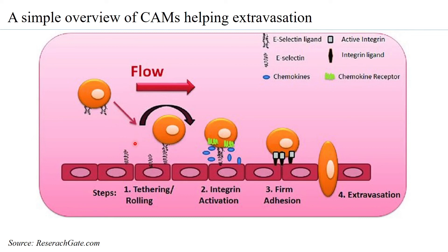As the leukocyte tethers, it will roll and further bind to integrins. When chemokines and chemokine receptors are activated, the integrin becomes activated, and slowly the leukocyte begins to bind very firmly to the endothelial layer through active integrin-ligand interactions.